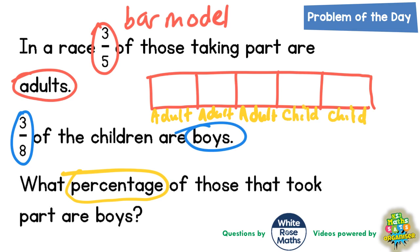But then it says three-eighths of the children are boys. So what we need to do is split the children's section on the end into eight pieces, because this bit on the end is just for children. So we can split each of the two children's squares into four, giving us eight pieces altogether.